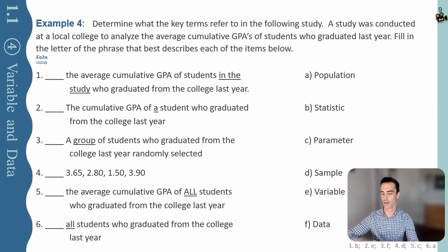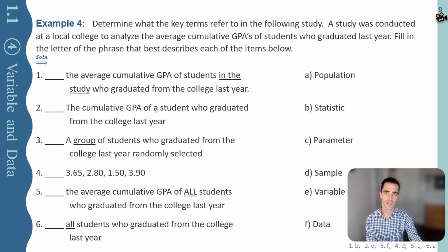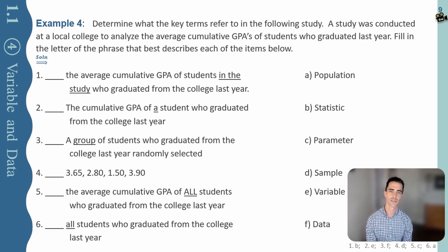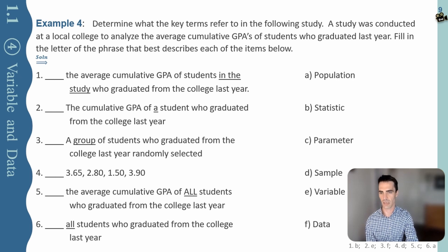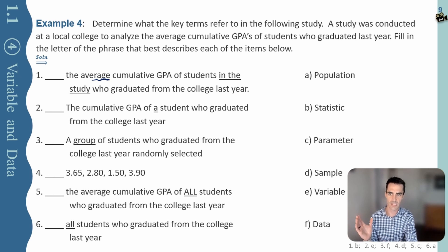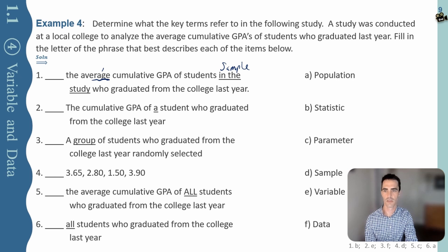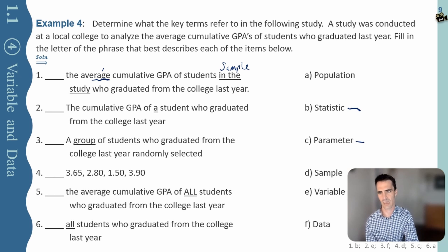A study was conducted at a local college to analyze the average cumulative GPA of students who graduated last year. First item: the average cumulative GPA of students in the study who graduated from college last year. Average refers to a descriptive statistic, and since it says 'in the study,' that's just the sample — so this is a statistic. Next: the GPA of a student who graduated from college — that's just one person, so that refers to data.